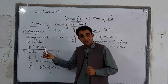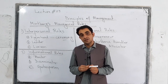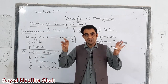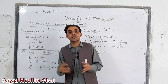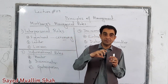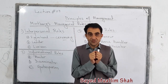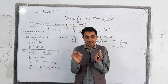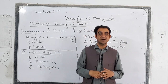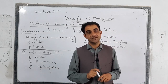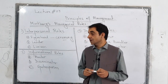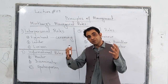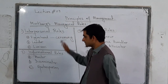Number C is liaison role. This role means that the manager is making different contacts outside the unit or outside the company by giving information, taking information, and sharing information. This role is called liaison role — in which they are making contacts with different people and different organizations outside their own company. All three of these roles are performed among the people by a manager, that's why we call them interpersonal roles.